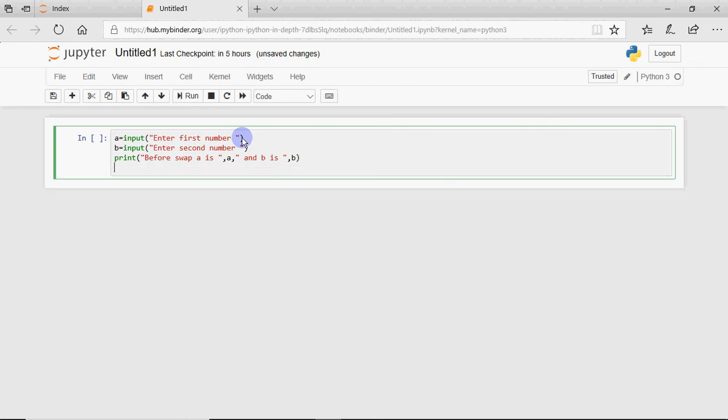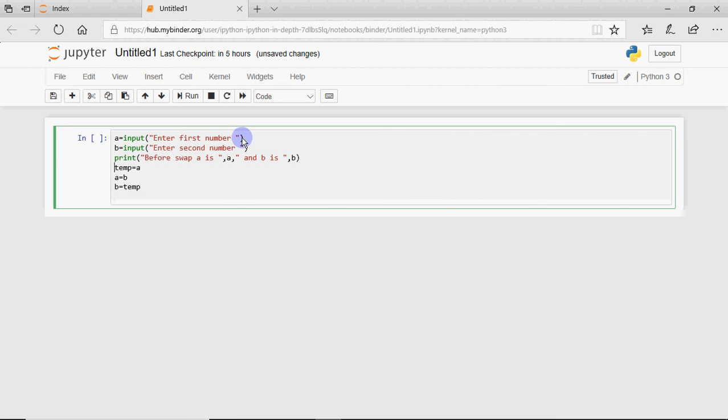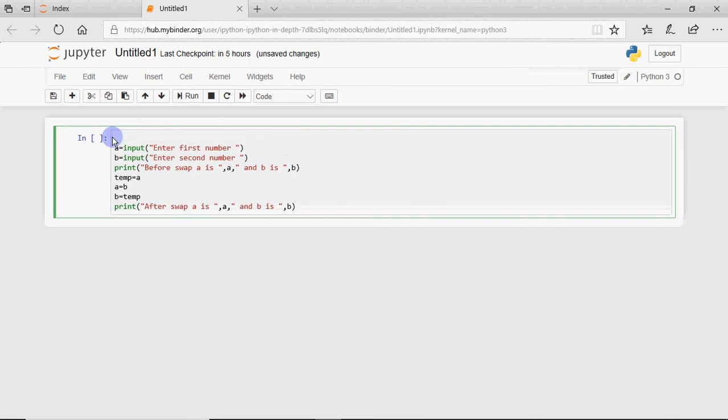Okay. And then we write temp is equal to A, A is equal to B, B is equal to temp. And then I want to print the values after the swap. So we write after swap. So this is the code which we are doing with third variable. Swapping two values using third variable. Okay. Let's execute this code.